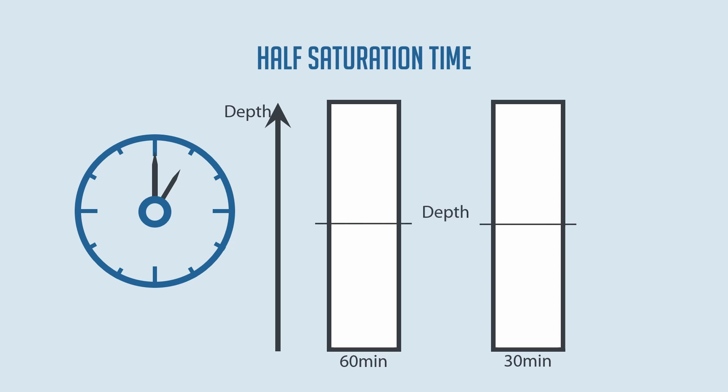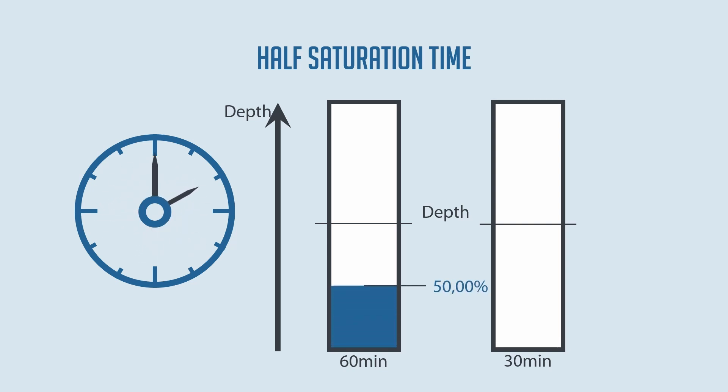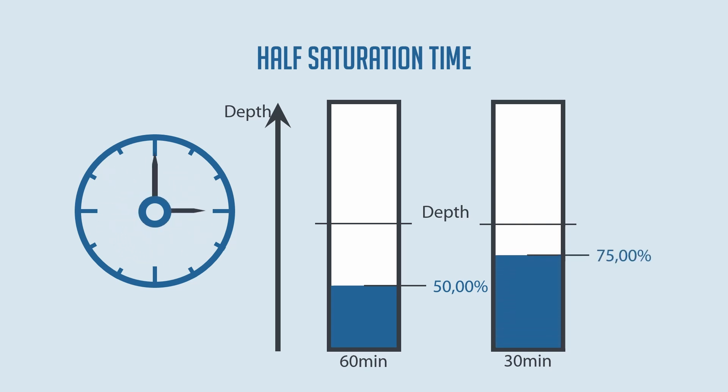When we are at any depth, the pressure to be aimed for corresponds to the pressure at that respective depth. The 60-minute tissue fills up by 50% within one hour. The 30-minute tissue passes through two half-saturation times in 60 minutes: it fills up by 50% after the first 30 minutes, and by a further 25% after the second 30 minutes, thus reaching 75% saturation after 60 minutes.